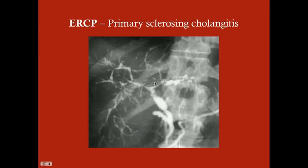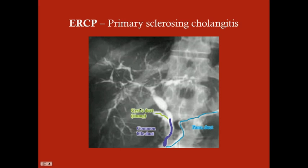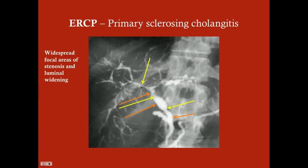Primary sclerosing cholangitis looks different on ERCP. In normal ducts you see nice smooth walls, but in PSC you get areas of stenosis. Before areas of stenosis, you get dilation because of increased pressure. You can see the common bile duct, pancreatic duct, a cystic duct stump from cholecystectomy, the common hepatic duct, and the right and left hepatic ducts — with alternating areas of dilation marked by orange arrows and stenosis marked by yellow arrows.